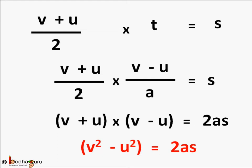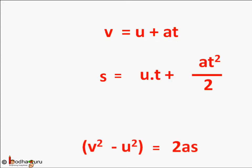So the three formulae are v is equal to u plus a t, s equal to ut plus half a t square, and v square minus u square equal to 2 a s.